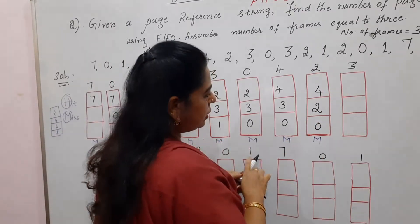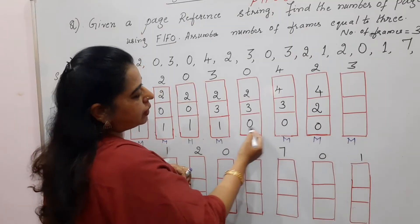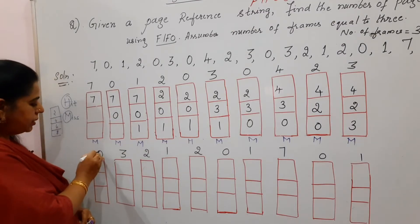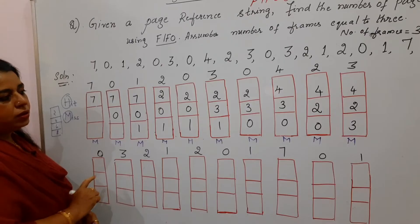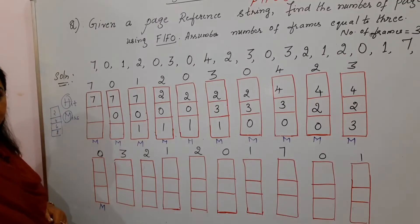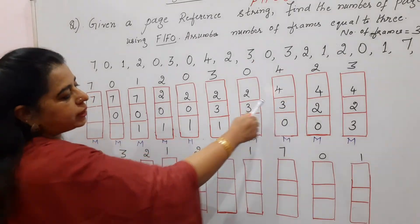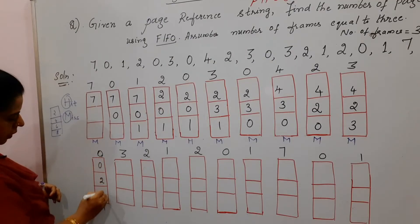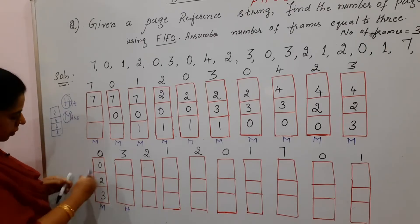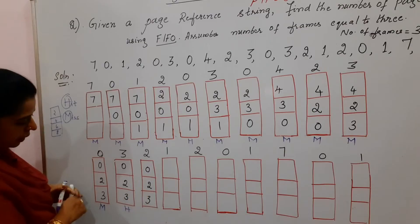Page 3 is already inside the memory — it is a hit, write H, keep as is. Page 2 is already there — hit, write H. Page 1 is not there — miss. Out of 2, 0, 3 — page 2 has appeared the most times (5 times), so it is the oldest page. Replace 2 with 1. Write M.